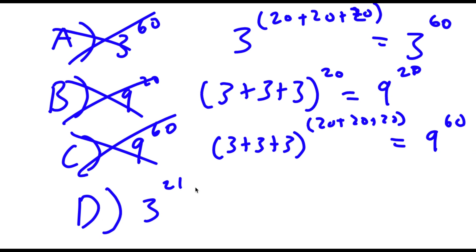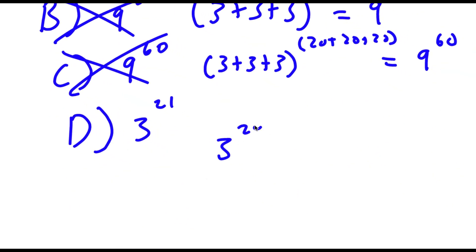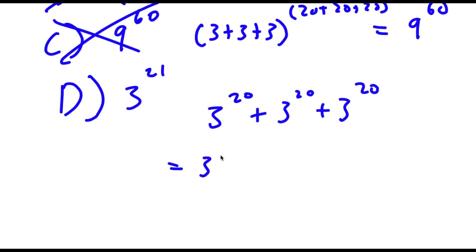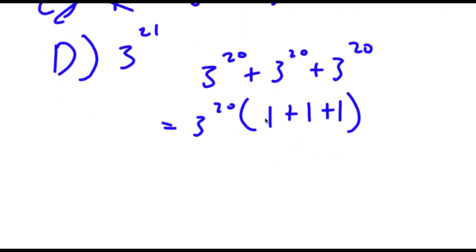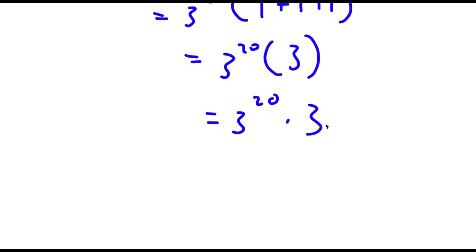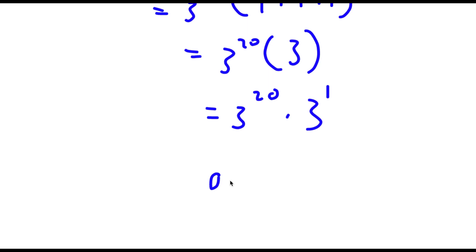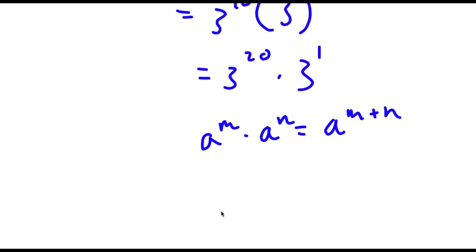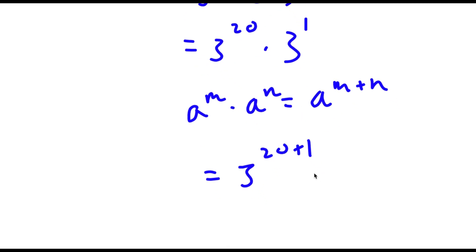So for our final answer, which is the right answer: start with 3 to the power of 20 plus 3 to the power of 20 plus 3 to the power of 20, and factor out 3 to the power of 20. So I have 3 to the power of 20 times 1 plus 1 plus 1. Simplifying in parentheses gives 3 to the power of 20 times 3, which is 3 to the power of 20 times 3 to the power of 1. Using the rule a to the power of m times a to the power of n equals a to the power of m plus n, this equals 3 to the power of 20 plus 1, which is 3 to the power of 21. So this is my answer.